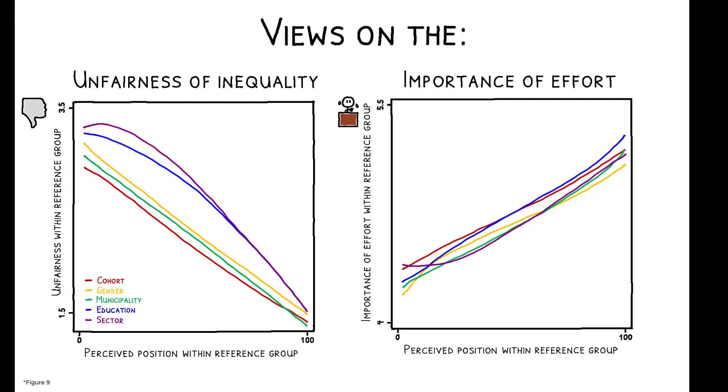First, social positions are correlated with views on fairness. Those who think they are ranked higher in a given group believe that inequality in that group is less unfair and that income differences are the result of effort rather than luck.